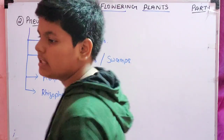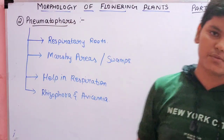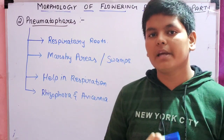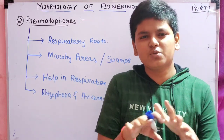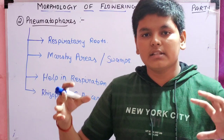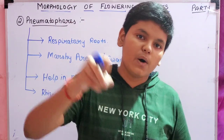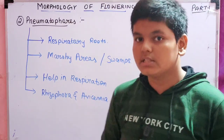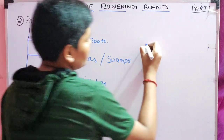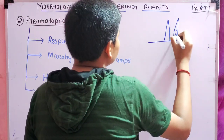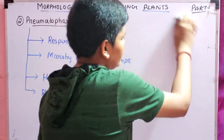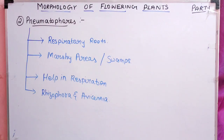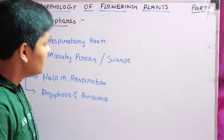Pneumatophores are respiratory roots found in marshy areas or swamps. In marshy habitats there is too much water and the soil is packed, so oxygen cannot go down. If there is no oxygen the plants will die. That is why the roots come out upward from the soil. These roots have some pores through which oxygen enters inside. These roots are called pneumatophores, found in plants like Rhizophora and Avicennia.